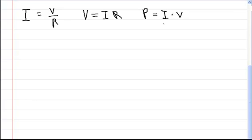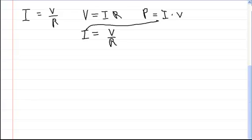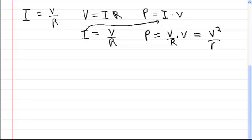You could also manipulate that equation further. If you didn't know the current, you could substitute I = V/R into the power equation, so you would have power is equal to the voltage divided by the resistance, times the voltage — which gives you voltage squared divided by the resistance.